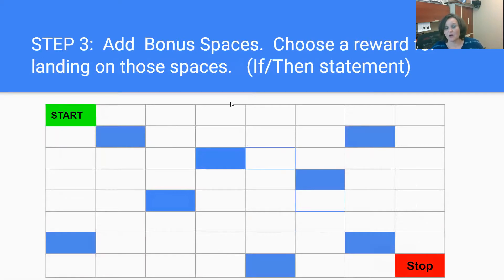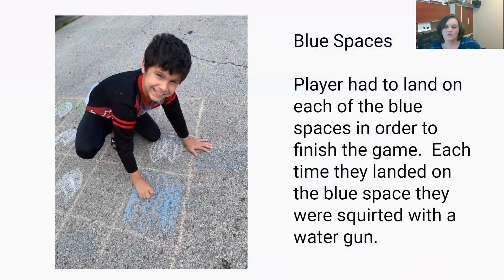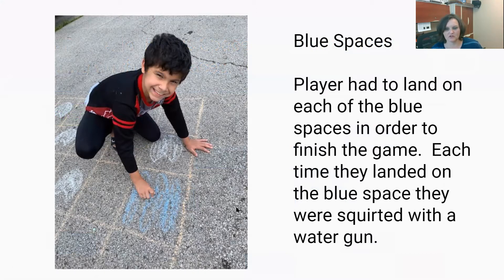Then we added bonus spaces, and with the bonus spaces we got to choose a reward when you landed on those spaces. This is an introduction to if-then statements — something you will use in coding a lot. So if a person lands on this blue spot, then something happens. We decided that if somebody landed on the blue spot, they would get squirted with a water gun. It was a really hot day and we thought that would be fun. These were the spots — if you landed on them you got squirted with the water gun.